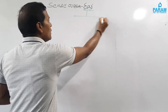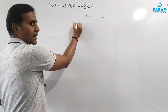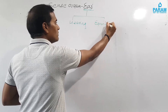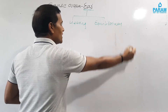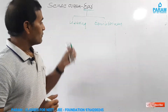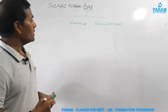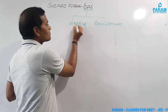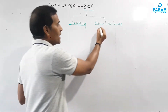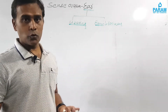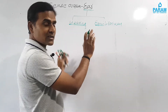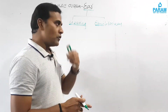The ear is an organ of hearing and equilibrium. We are going to understand the meaning of equilibrium and all related things one by one. Hearing you can understand — equilibrium means this is related to positioning of your body. Both these functions are assigned to the internal ear, which we will discuss later.